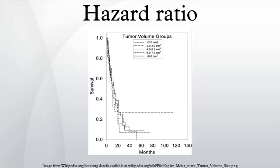The proportional hazards assumption for hazard ratio estimation is strong and often unreasonable. Complications, adverse effects and late effects are all possible causes of change in the hazard rate over time. For instance, a surgical procedure may have high early risk, but excellent long-term outcomes. If the hazard ratio between groups remains constant, this is not a problem for interpretation. However, interpretation of hazard ratios becomes impossible when selection bias exists between groups.